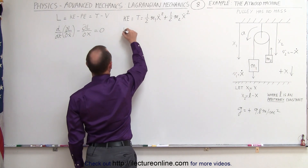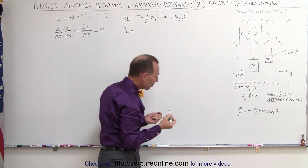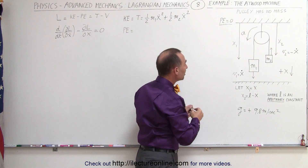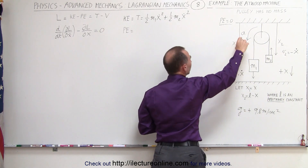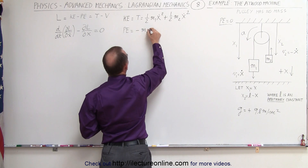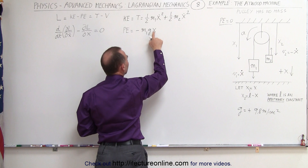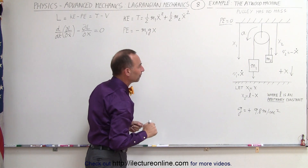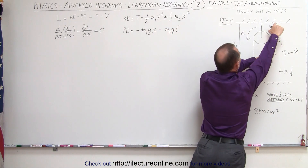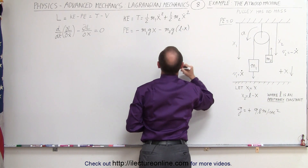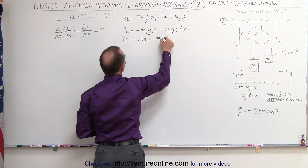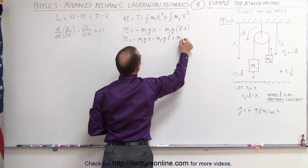The potential energy: let's call the potential energy at the ceiling equal to zero as an arbitrary reference point. That means we'll have negative potential energy below the ceiling. The potential energy for m1 is minus m1·g·x. And we have minus m2·g times x2, which is l minus x, giving us minus m2·g·(l minus x).